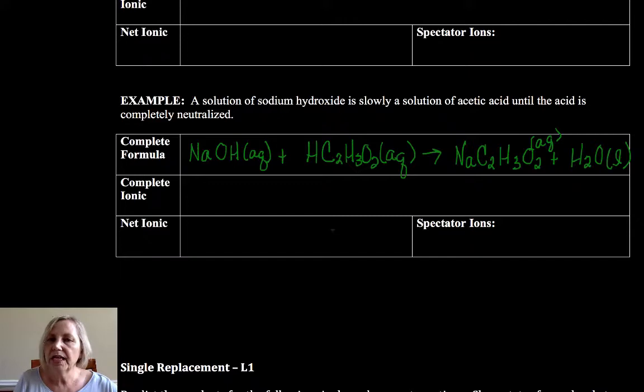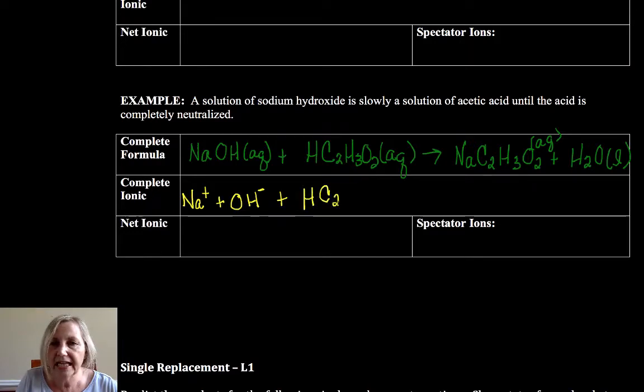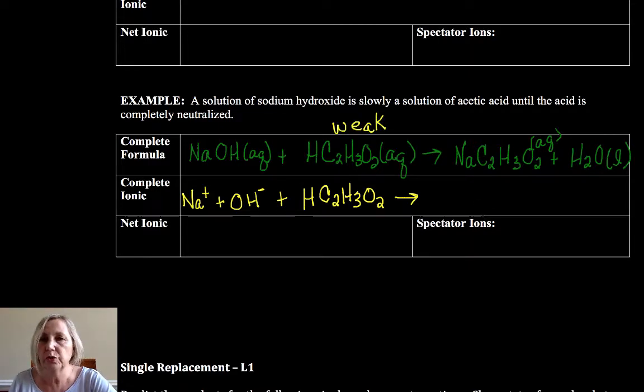So we dissociate strong acids, strong bases, soluble salts. So the cation in this strong base is the sodium ion. The anion in this strong base is the hydroxide. Acetic acid is weak. You need to memorize your strong acids. So either ask your teacher or look those up. We're going to keep that weak acid. Acetic acid is a weak acid. How do I know it's weak? Because it's not one of the strong. So in case I misspoke earlier, I want to make sure you know that's weak.